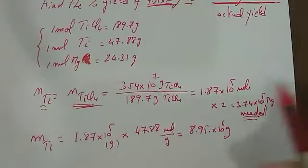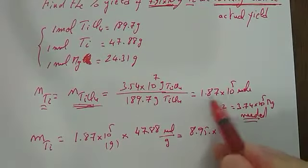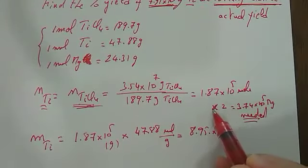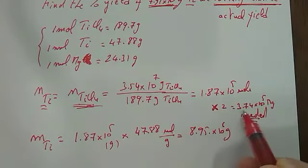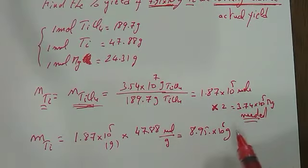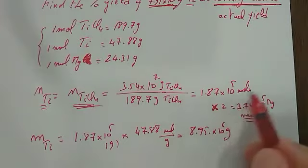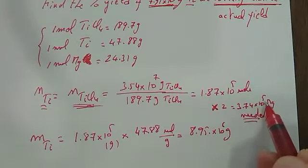Theoretically, the number of moles of Mg should be twice this number. So I multiply by 2 and get 3.74 times 10^5 moles of magnesium. This amount of titanium chloride reacts completely with this amount.